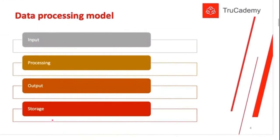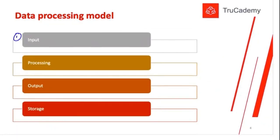In the data processing model, the first part of an MIS system will always involve some devices used to collect data. Sarah, what is data? Data is any facts and stats — any facts and figures that have not been processed or analyzed yet.